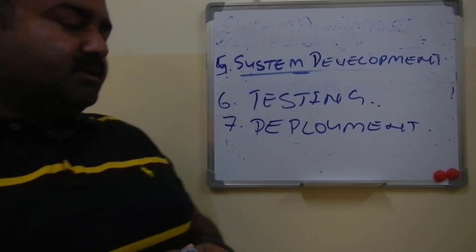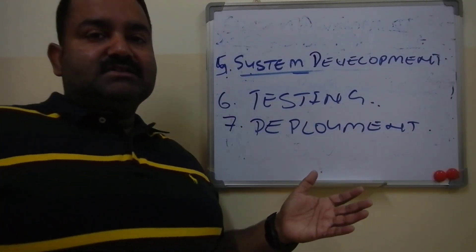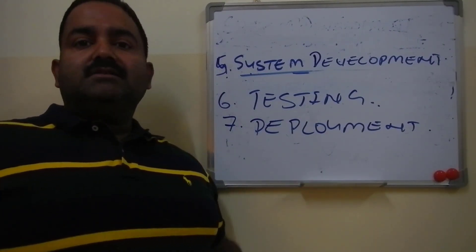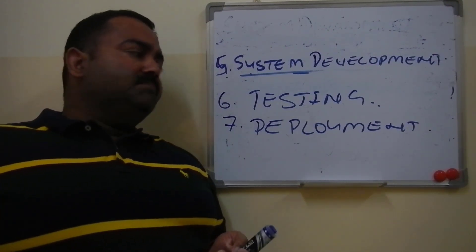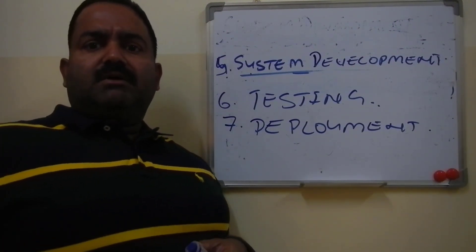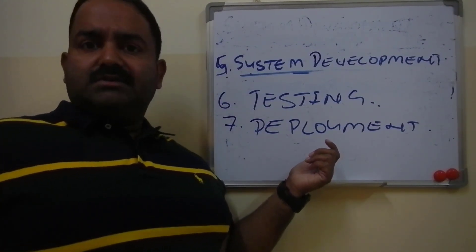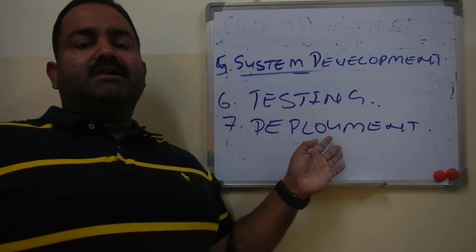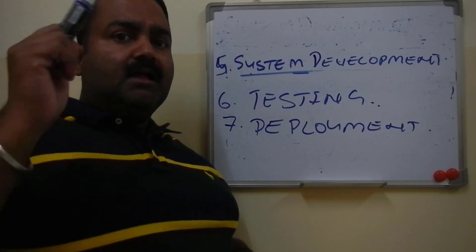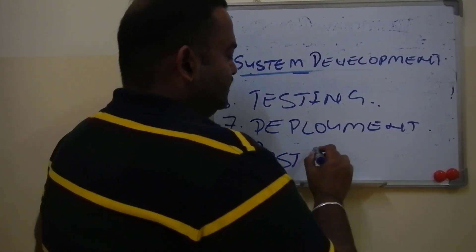After testing comes Deployment. Deployment is installing the system at the customer's site. You made a system for a client and now you install it at their location. One of the most important activities of deployment is user training — we train the user so they can use the system. Delivering and installing the system at the user's location is called system deployment.